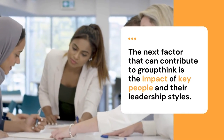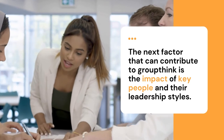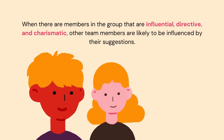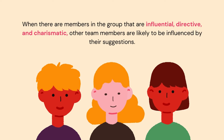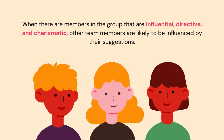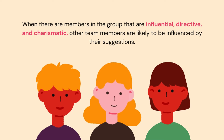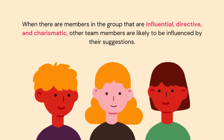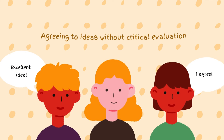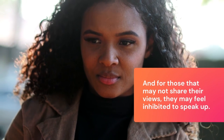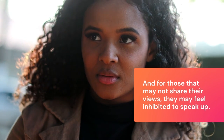The next factor that can contribute to groupthink is the impact of key people and their leadership styles. When there are members in the group that are influential, directive, and charismatic, other team members are likely to be influenced by their suggestions. This runs the risk of others polarizing around the influencer's position by agreeing to their ideas because they trust them, and doing so without critically evaluating their suggestion. And for those that may not share their views, they may feel inhibited to speak up.